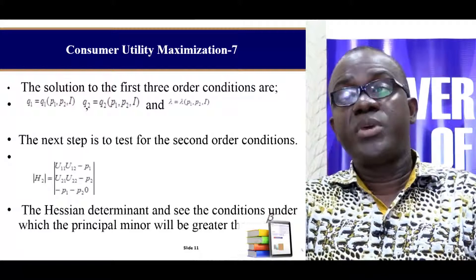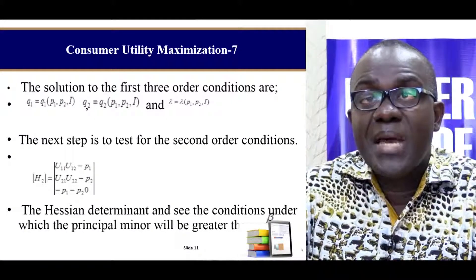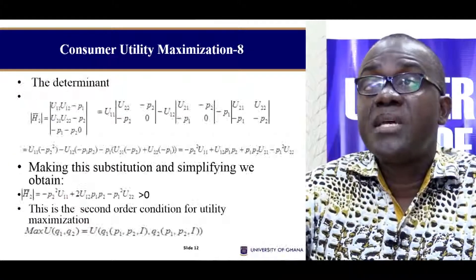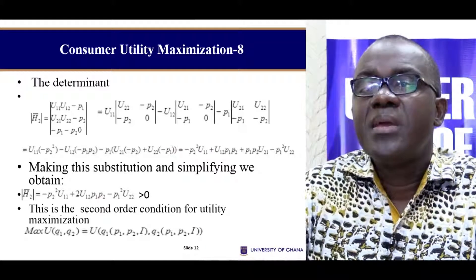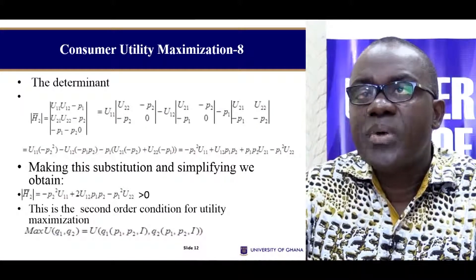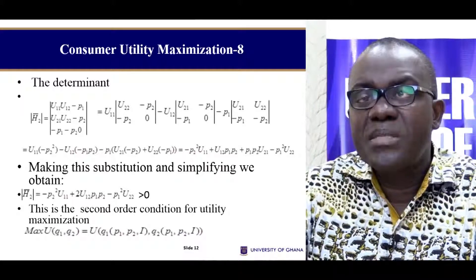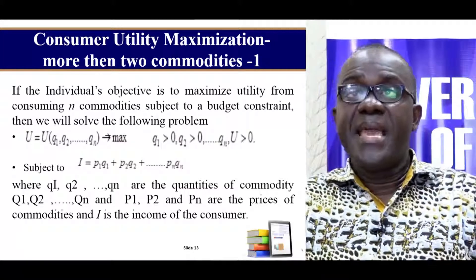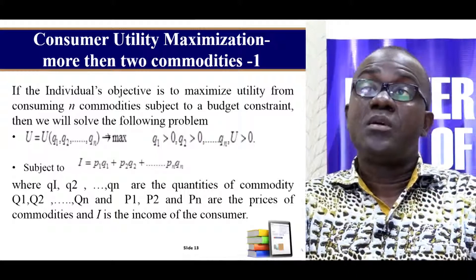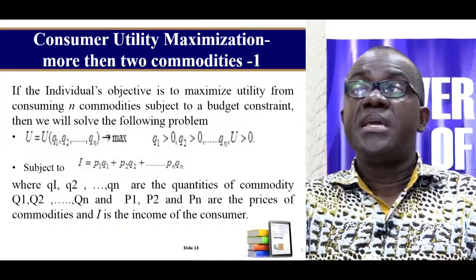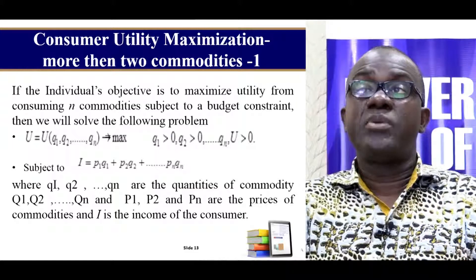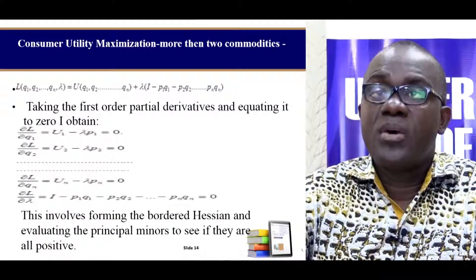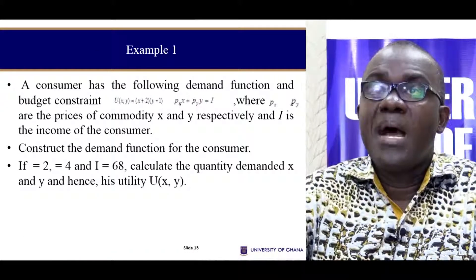Since this is a constrained optimization, we have to form our bordered Hessian determinant. When dealing with two variables, even though we have a 3×3 matrix, we use the bar here to signify that we are dealing with a bordered Hessian determinant. When we evaluate the determinant, we get this equation, and it's going to be greater than zero since we are dealing with a maximum. We can also generalize to Q number of commodities, in which case we have an objective utility function maximized subject to the budget constraint, and we find our first-order conditions to solve for the maximum value.